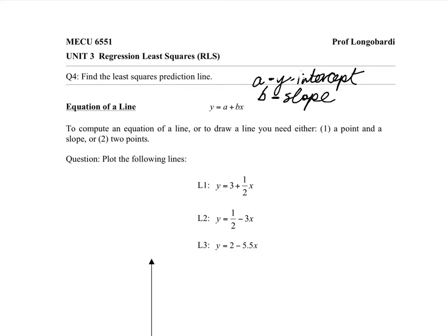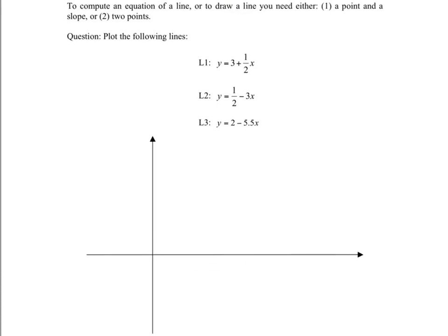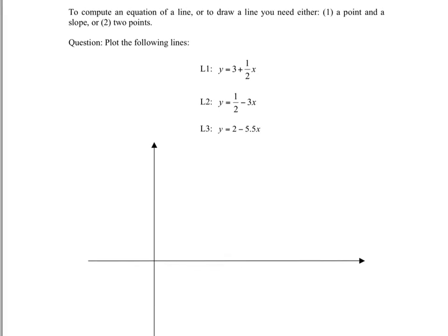All right, so let's look at each of these equations and draw them. In the first one, A is 3, and the slope is 1 half. Okay, so 3 is the A, and 1 half is the B. So how to draw this?